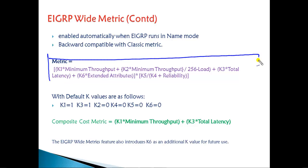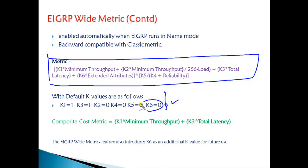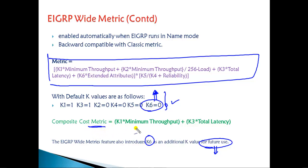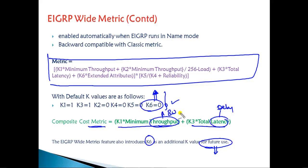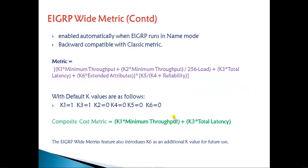The overall formula using default K values is: K1 × minimum throughput + K3 × total latency. A new K6 value has been introduced in the wider metric for future use — as of now we still use K1 through K5. The naming has slightly changed: bandwidth is now referred to as throughput, and delay is referred to as latency, but the underlying concept remains the same.